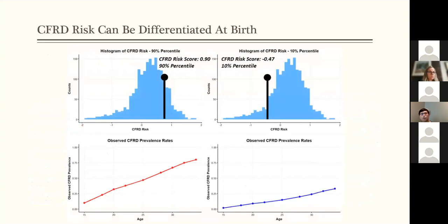So here we just show that the high-risk and low-risk individuals in our validation set have quite different risk profiles over their lifetime.